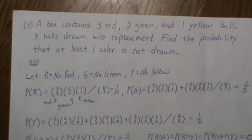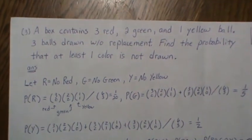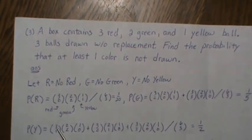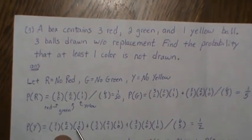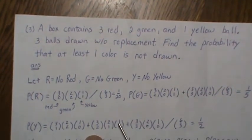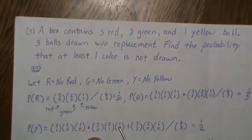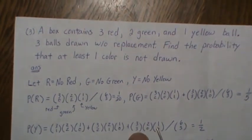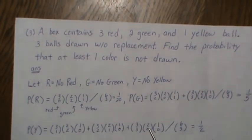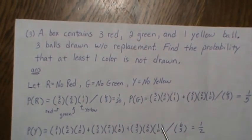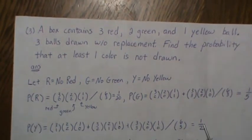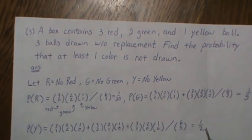The probability of no yellow has three cases: one red, two green, zero yellow; or two red, one green, zero yellow; or three red, zero green, zero yellow — all over six choose three. This gives a probability of one-half.